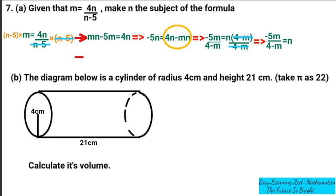So now we have made n the subject of the formula. You can swap the terms and put n on the left side, so n equals negative 5m over 4 minus m. That is the final answer. Let me just correct where it was written — it should be negative 5m. Now let's go to question 7b.